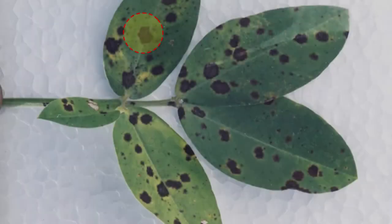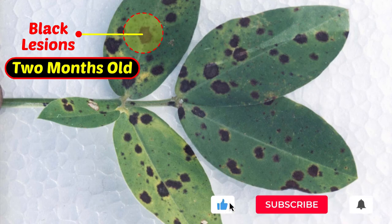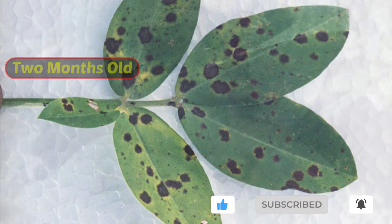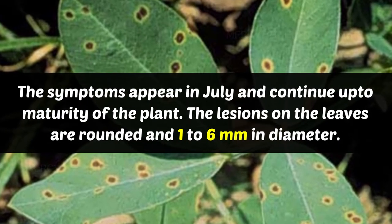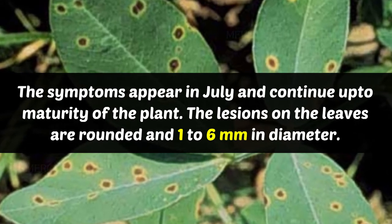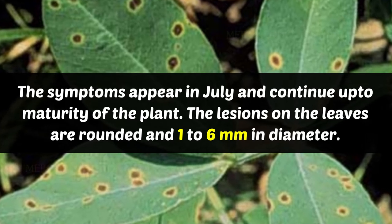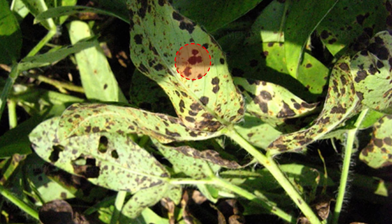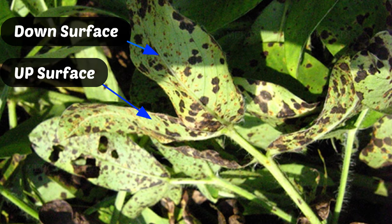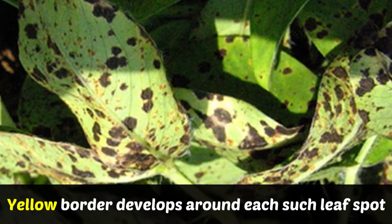The visible symptoms are lesions that appear on the leaves when the plants are at least two months old. The symptoms appear in July and continue up to maturity of the plant. The lesions on the leaves are rounded and 1–6 mm in diameter. These spots are dark brown or black and found on both surfaces of the leaf. A yellow border develops around each such leaf spot.